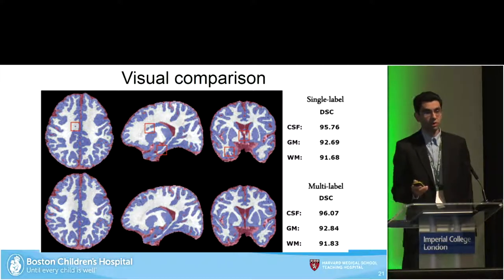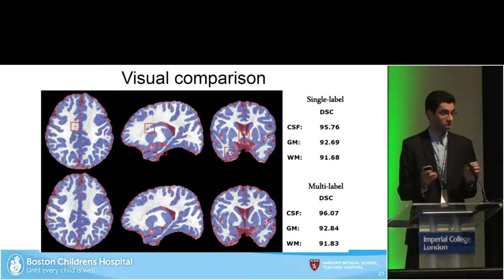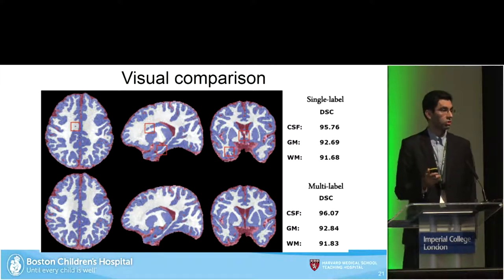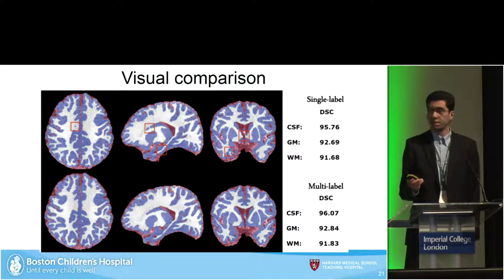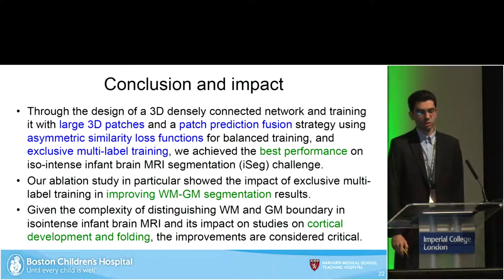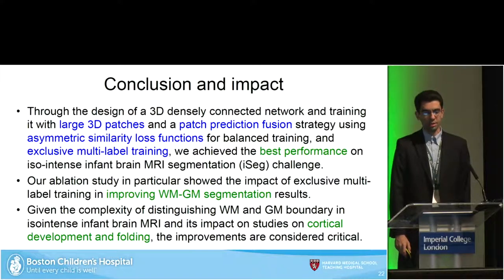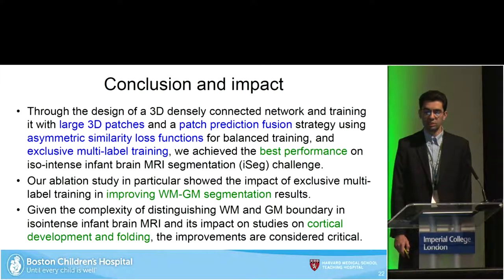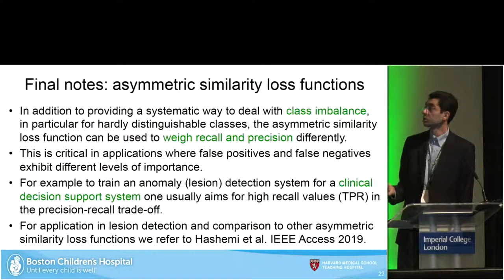In conclusion, through the design of a 3D densely connected network trained with large 3D patches and a patch prediction fusion strategy, using asymmetric similarity loss functions which were automatically adjusted, and exclusive multi-label training, we achieve the best performance in one of the most challenging MRI segmentation tasks. Given the complexity of distinguishing white matter and gray matter boundaries in this data, and the importance of cortical development and folding studies at this particular age, the improvements are considered crucial.